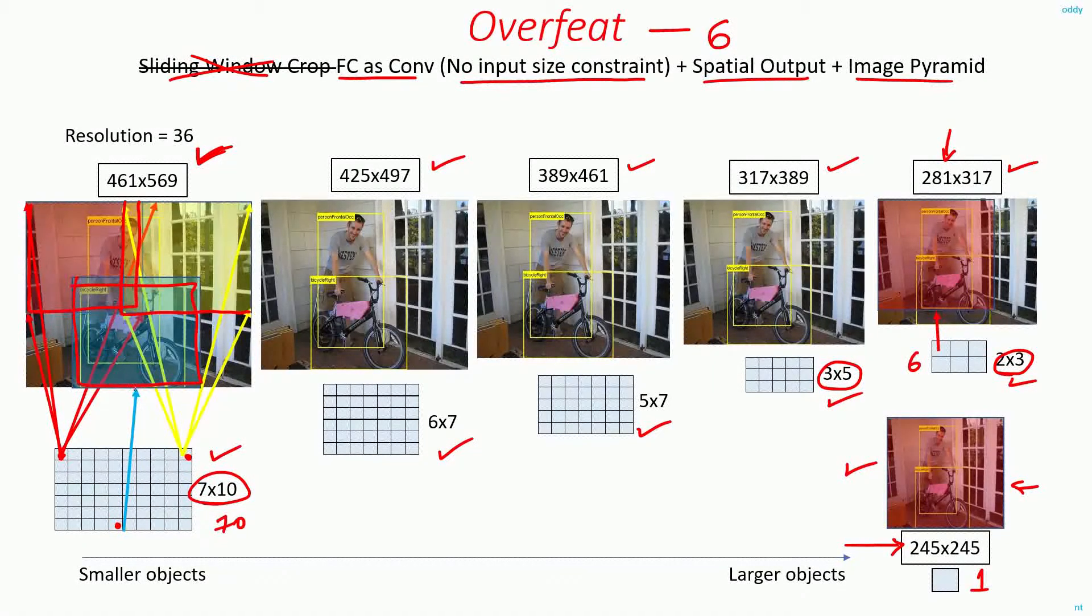Probably, the bicycle will get detected here, and you will get the confidence score and bounding box for the bicycle in this location. But for this person, you may not be able to detect in these scales. But this person might get detected in this scale, because here, the receptive field of the network perfectly matches this person. That is, the person is correctly enclosed inside this receptive field at this scale.